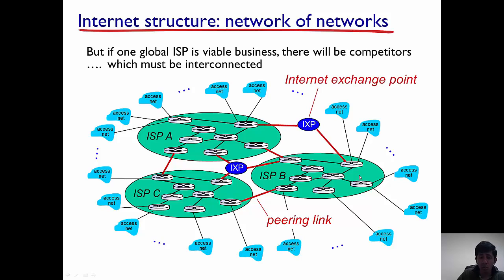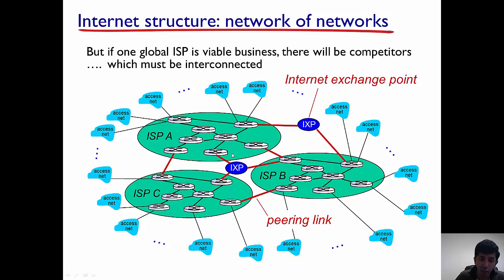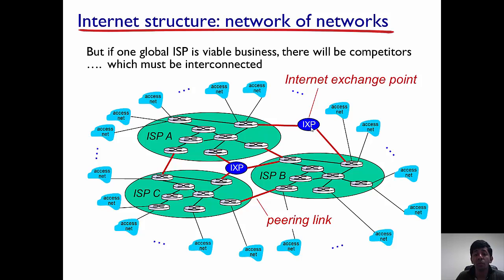Apart from this, there are also internet exchange points where these global ISPs meet and exchange network traffic. So in addition to having direct peering links, there are also these internet exchange points — places where different global ISPs meet and exchange packets, also driven by economic agreements.